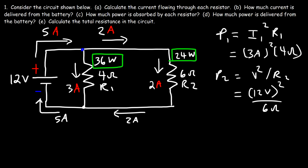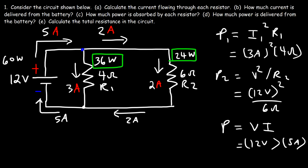Now let's calculate the power delivered by the battery using voltage times current. The battery is 12 volts and it delivers a current of 5 amps, so 12 times 5 is 60 watts. Notice that the power delivered by the battery (60 watts) equals the total power absorbed by all resistors — 36 plus 24 is 60. Due to the law of conservation of energy, the rate at which energy is transferred from the battery equals the rate at which the resistors absorb that energy.